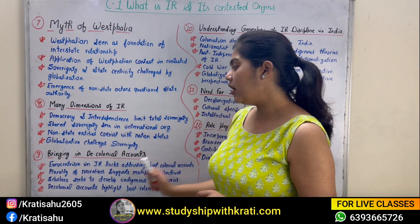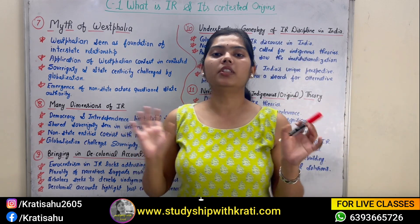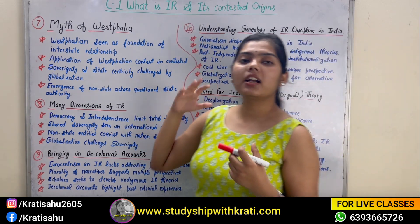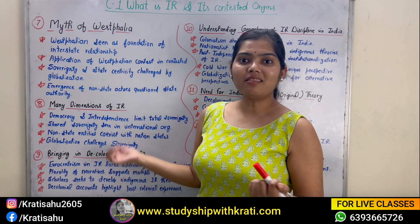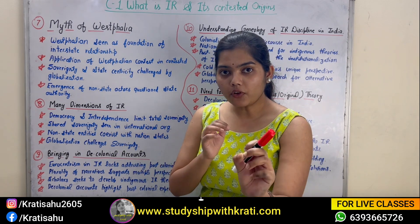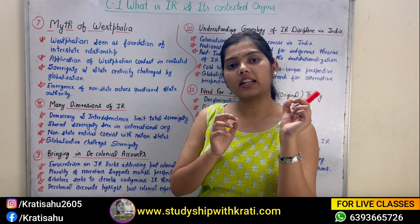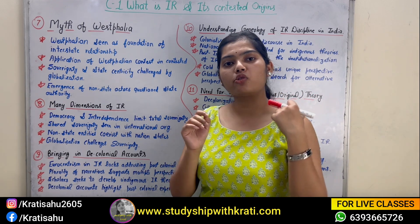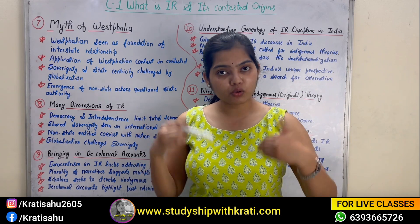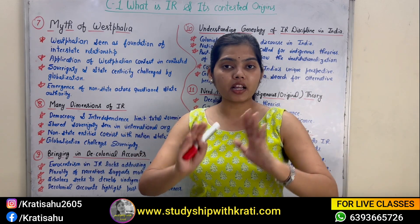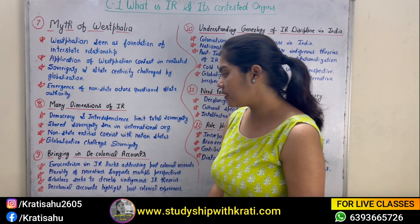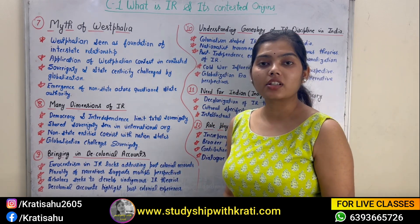The next topic is bringing in decolonial accounts. This chapter is about understanding when and how the origin of IR happened. In 1648 when these people developed sovereignty and tried to apply it, Asia and Africa were colonized. The English school was then reforming the system and bringing their ideas into other countries, ignoring their cultural and social backgrounds. What I am trying to say is that there is Eurocentrism in IR.